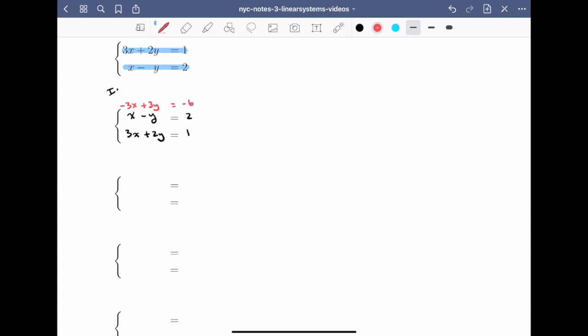Now I'll leave equation 1 alone as x minus y equals 2. And to equation 2, I'm going to add the red version of equation 1. This gives me 0x plus 5y equals minus 5.